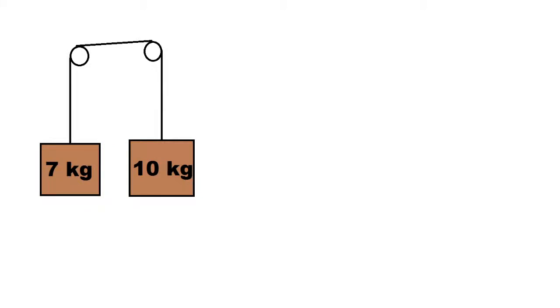In this problem we have a pulley system with two weights: one 7-kilogram weight and one 10-kilogram weight. We want to find how fast the boxes accelerate and the tension in the line. We'll be assuming no friction and we won't be paying attention to the mass of the pulleys.